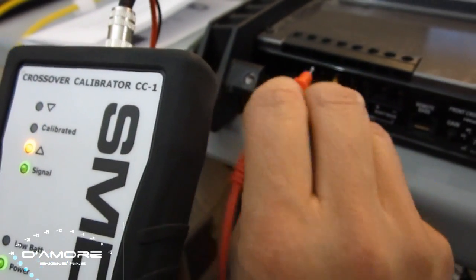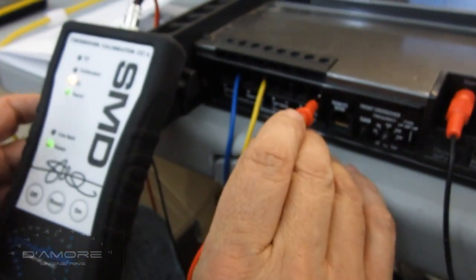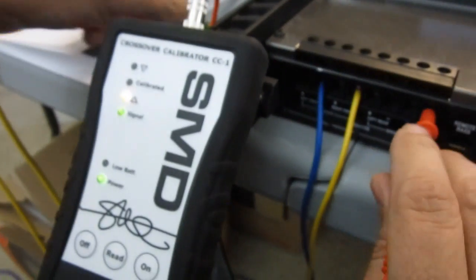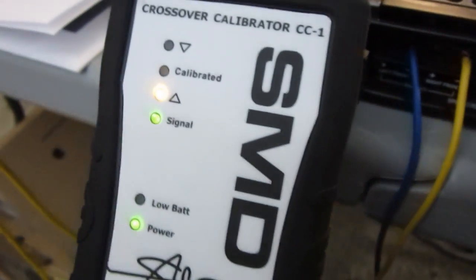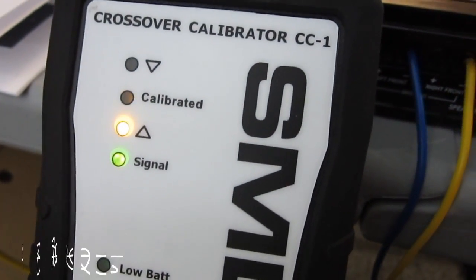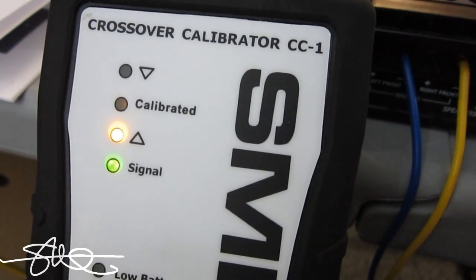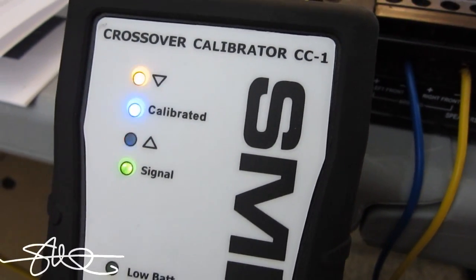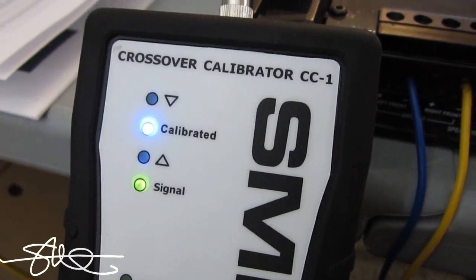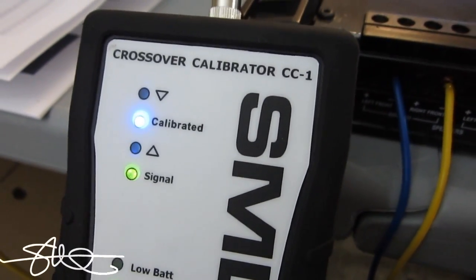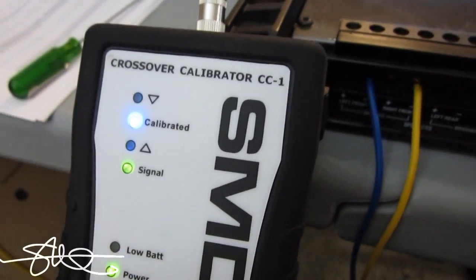So it's locked into this front channel. So now we just take the probe. And stick it on the rear channel. And it's going to tell us where the gain is at the rear channel. It's saying that it's low and it needs to go up. So we turn the gain pod into or dialed. There we are. So now the CC1 says these two channels are at the same level.